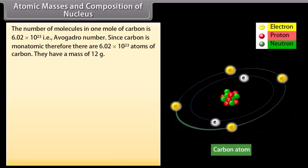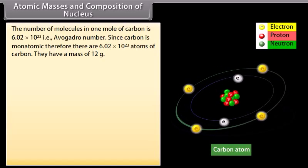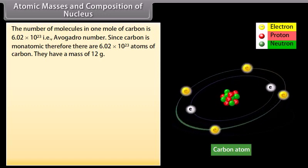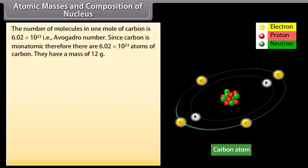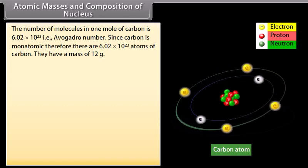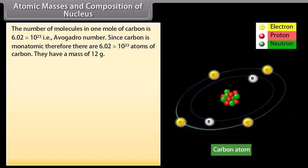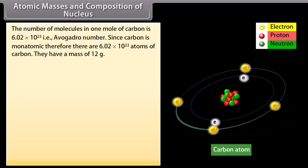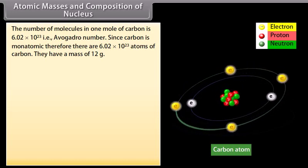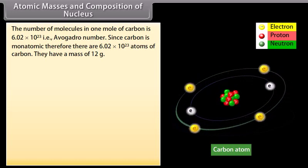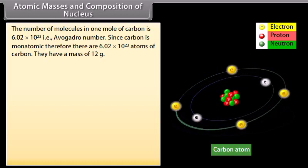The number of molecules in one mole of carbon is 6.02 into 10 raised to the power 23, that is Avogadro number. Since carbon is monoatomic, therefore there are 6.02 into 10 raised to the power of 23 atoms of carbon. They have a mass of 12 grams.